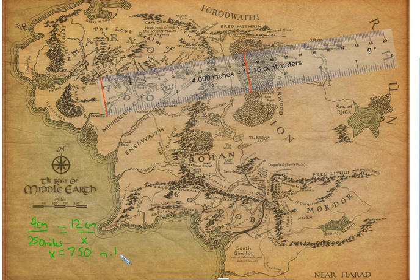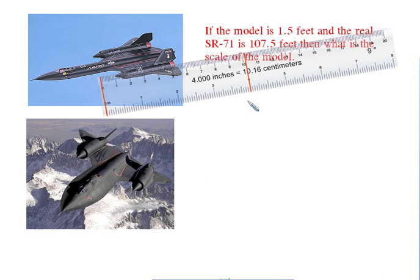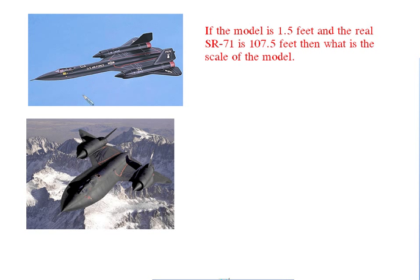So no wonder they took so long to get there — and 'There and Back Again' is the name of the book that Bilbo writes. Now this last part is an example of the SR-71 Blackbird, an important plane for spying. If you look here, this is a model — it's 1.5 feet. The real SR-71 is 107.5 feet. What is the scale of the model? I take the model size, 1.5, over the actual size, 107.5.